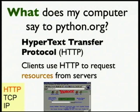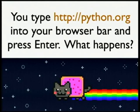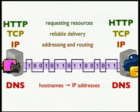That is what my computer says when talking to python.org — we use HTTP to request resources from servers. So we've answered our four questions. The first thing we do is a DNS request to translate a hostname to an IP address. At the bottom layer, we use IP to handle addressing and routing through the Internet. On top of that is TCP for reliable delivery. And at the application level we use HTTP to request resources from servers. That is our story.